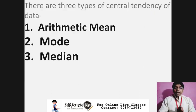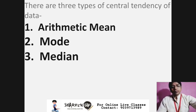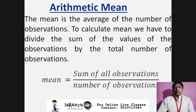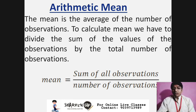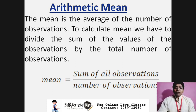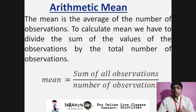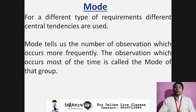There are three types of central tendency of the data: arithmetic mean, mode, and median. The mean is the average of the observations. To calculate the mean, we divide the sum of the values of the observations by the total number of observations. All the numbers which we use as information are called observations.